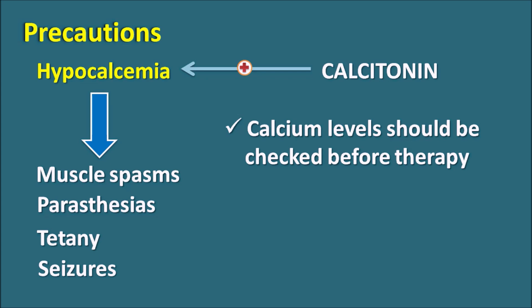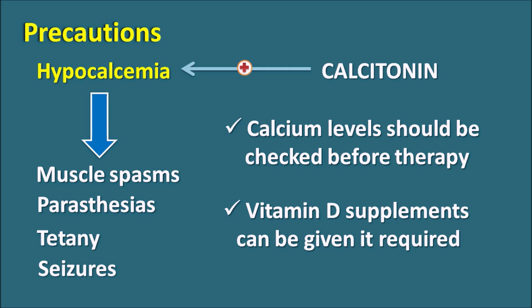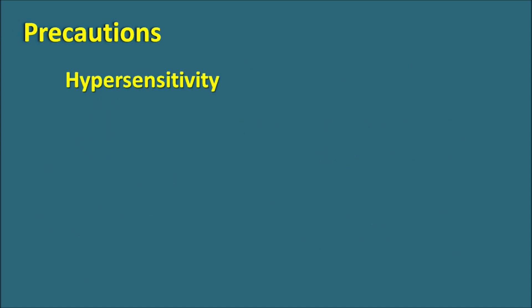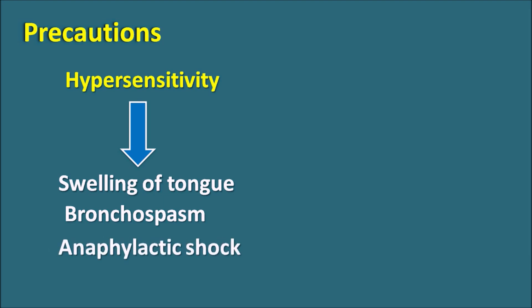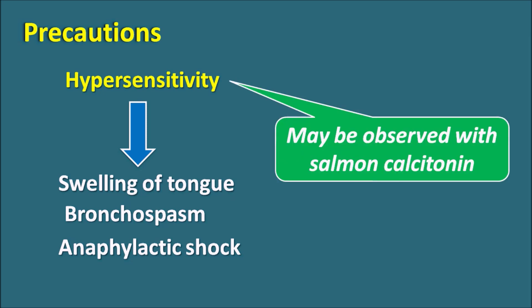Sometimes based on the requirement, we can also add supplements like vitamin D, which can help control the hypocalcemia produced by calcitonin. Another important precaution is hypersensitivity. Calcitonin can produce hypersensitivity reactions including swelling of the tongue and bronchospasm, as well as serious anaphylactic reactions and anaphylactic shock. If any hypersensitivity reactions are produced, this drug should be stopped immediately. These hypersensitivity reactions may be more common with salmon calcitonin obtained from salmon fish, whereas synthetic derivatives have somewhat fewer hypersensitivity reactions.